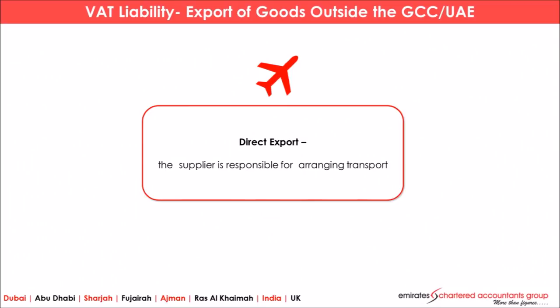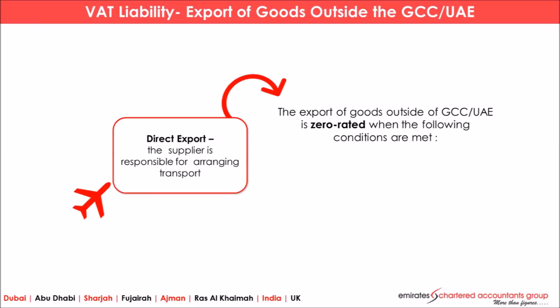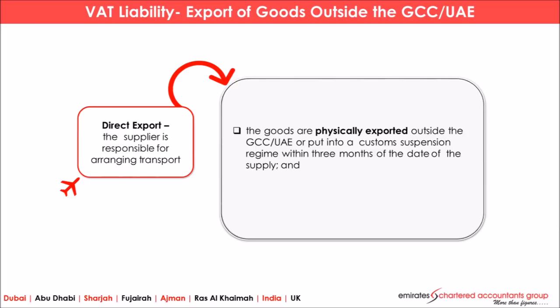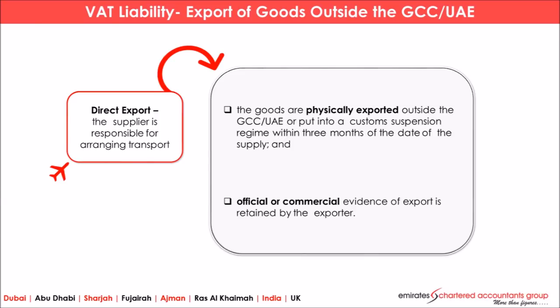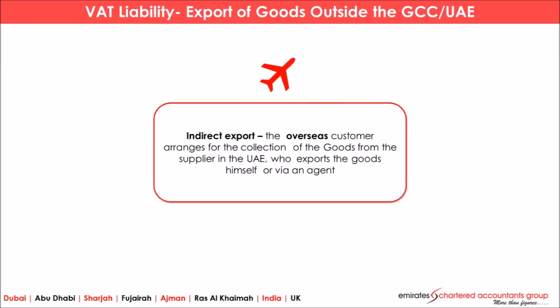In direct export, the supplier is responsible for arranging transport. There are two conditions to be satisfied: first, the goods are to be physically exported from the UAE to outside; second, there should be official as well as commercial evidence of export, which is to be retained by the exporter. If these two conditions are satisfied, it will be considered as an export and eligible as a zero rated supply.